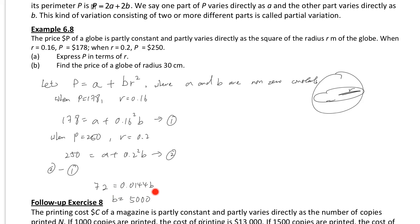Divide 0.0144 on both sides and then you can find the value of b. After that, you can find the value of a by substitution. b equals 5000 and a equals 50. So we know P equals 50 plus 5000r squared.